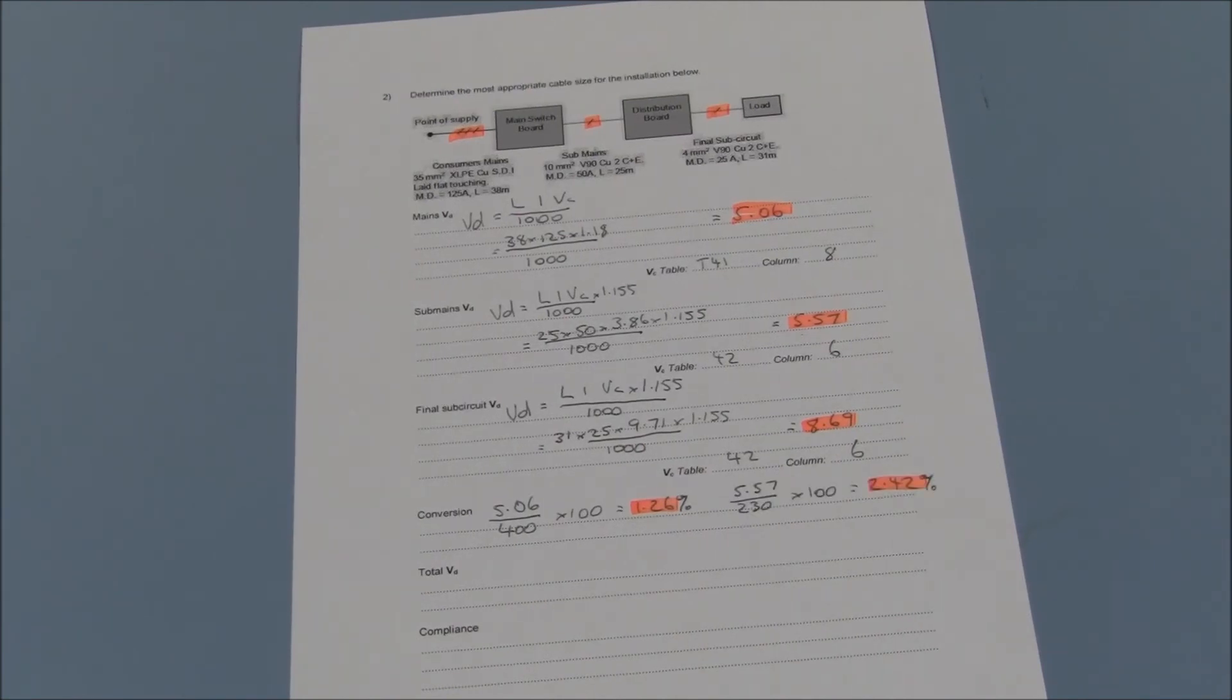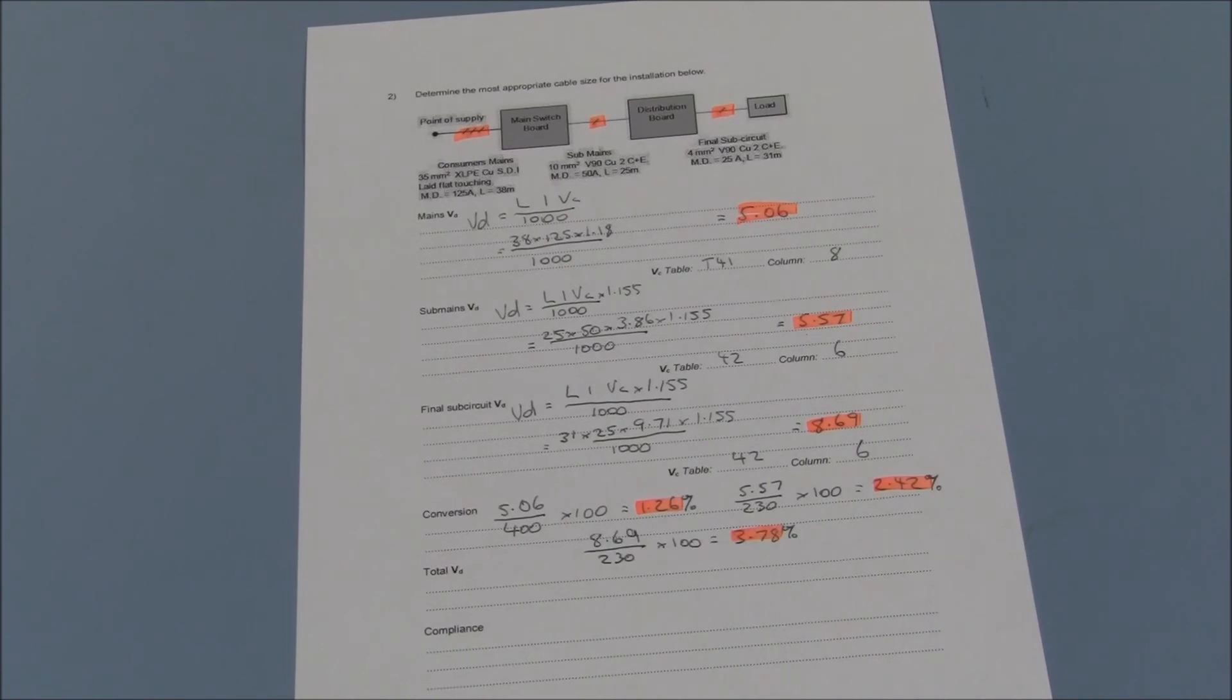The sub main attracted a voltage drop of 5.57 volts, which is 2.42% of the supply voltage of 230 volts. The final sub circuit attracted a voltage drop of 8.69 volts, which is 3.78% of the supply voltage.